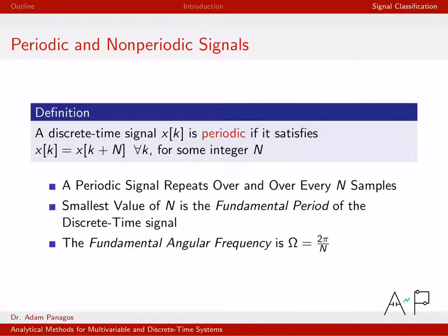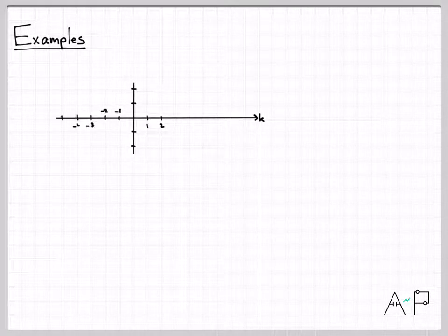All right, so that's the core definition of what a periodic signal is. There's these core definitions of the period and the fundamental frequency. Let's go ahead and draw a few examples of what some periodic signals might look like.